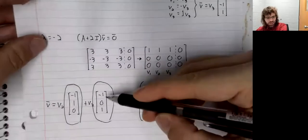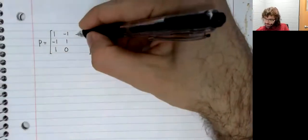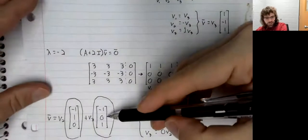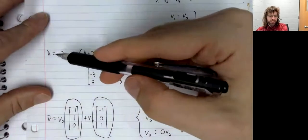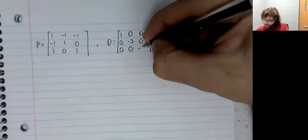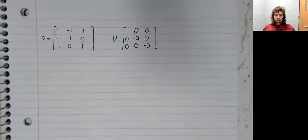We'll finish out P with this eigenvector. And this eigenvector also came from negative two. So when we finish out D, negative two is showing up twice on the diagonal. And here's our diagonalization, or at least here's P and D. We normally don't bother writing down P inverse.